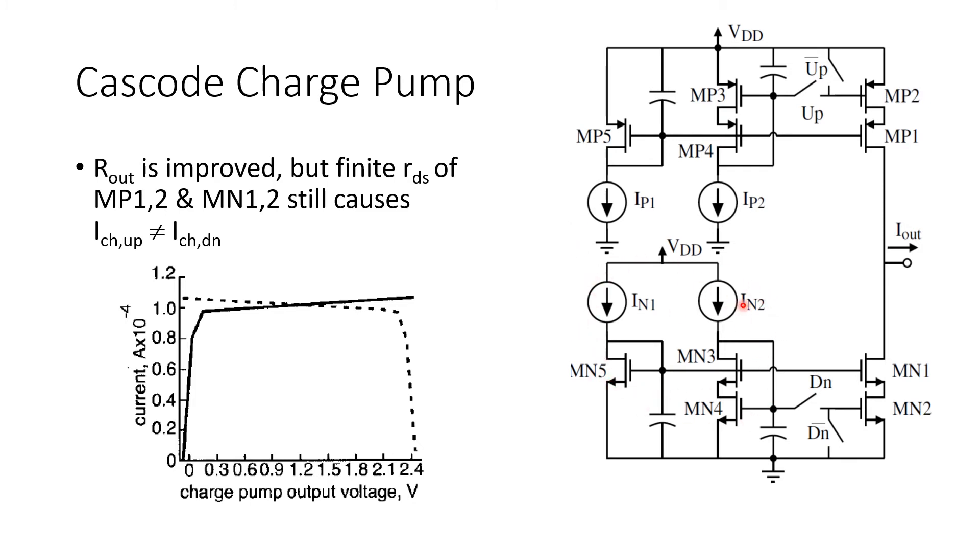And you'll see here that the inputs to the charge pump, the logical inputs pull-up and pull-down, are applied to these switches here. When pull-up is active, the bias voltage is applied to the gate of MP2 and current is sourced from VDD. When pull-down is active, the bias voltage is applied to MN1 and current is sunk from the output.